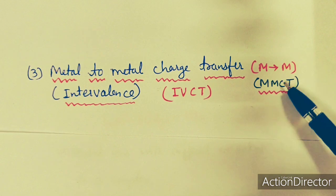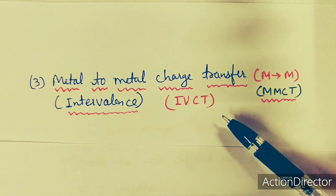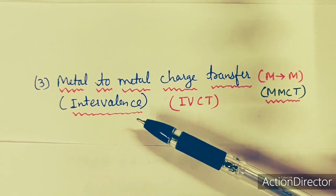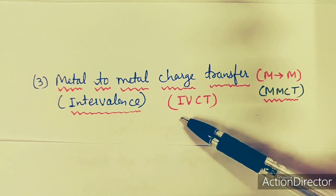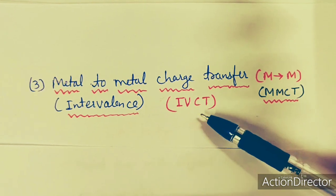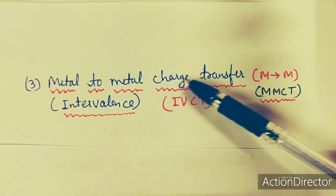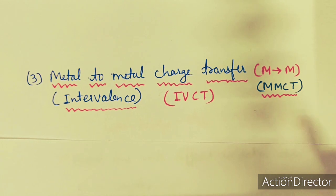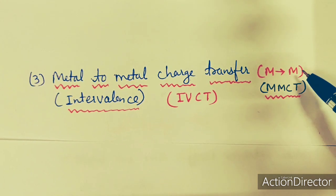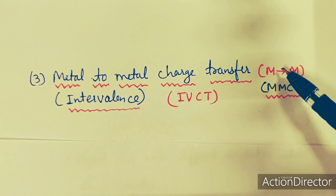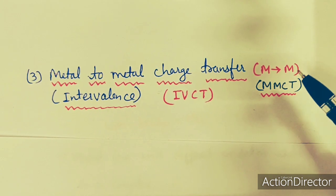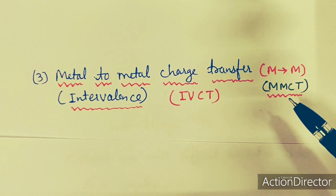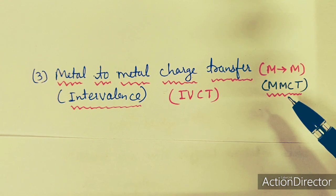These can also be called as MMCT, and the other name for these transitions is intervalence charge transfer. These are also called IVCT because charge transfer means electronic transition. This is a kind of redox transfer.